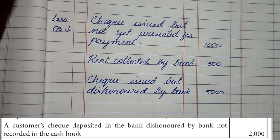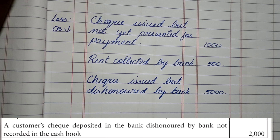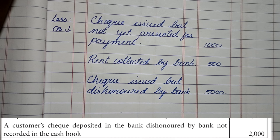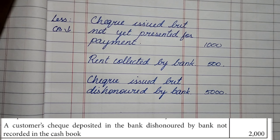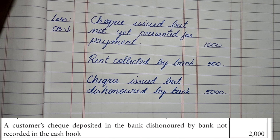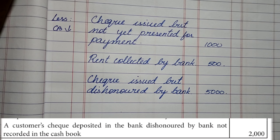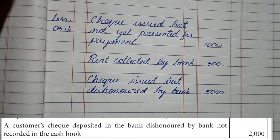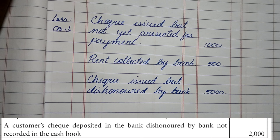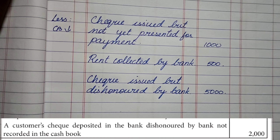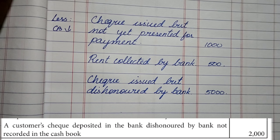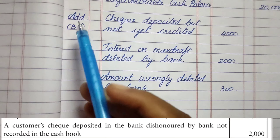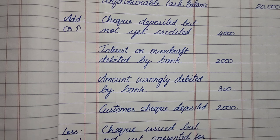The final transaction is a customer's check deposited in the bank but dishonored by the bank, and not recorded in the cash book. A customer gave us a check and we deposited it, recording it on the receipt side of the cash book. The bank dishonored it because the customer had insufficient funds, so the passbook did not receive the money. However, the cash book shows an increase since we recorded it on the receipt side. Therefore we put this item in the Add category.